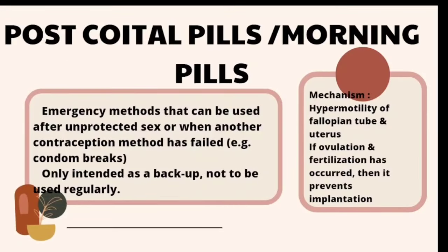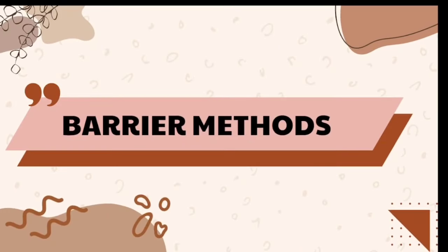The last type is post-coital pills, also known as morning-after pills. As the name indicates, they are recommended within 72 hours of unprotected intercourse and are only taken in emergency cases. Double doses should be taken immediately after unprotected sex, followed by another double dose after 12 hours. This method should only be used in emergencies such as rape, contraceptive failure, or unprotected sex.